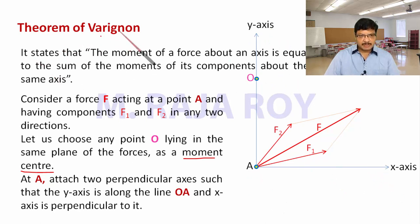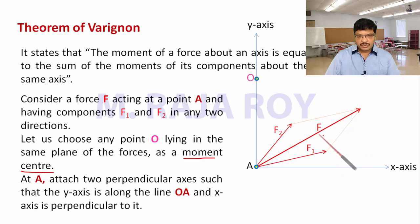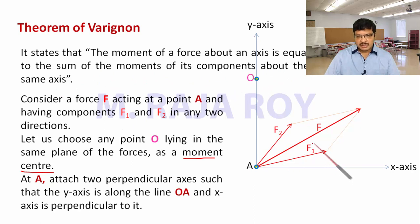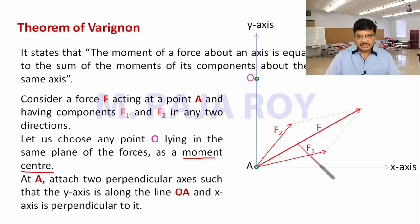This theorem of Varignon states that the moment of a force about an axis — that means whatever moment you are taking with respect to force F — is equal to the sum of the moments of its components about the same axis. That means if you take the moment of F1 about O and F2 about O and sum them, that will be equal to the moment produced by F. That is the meaning of this theorem.